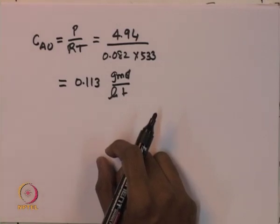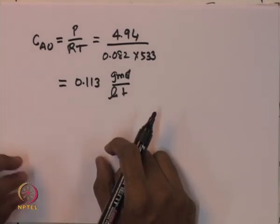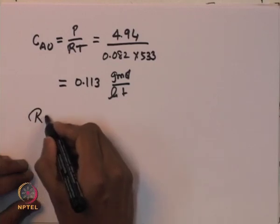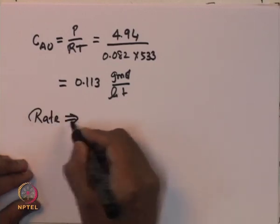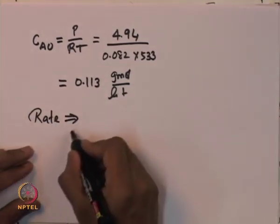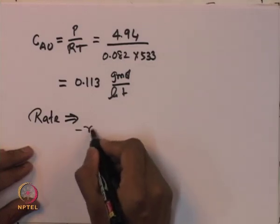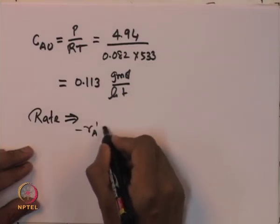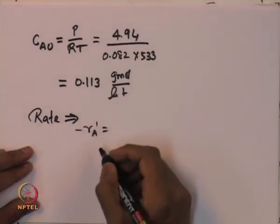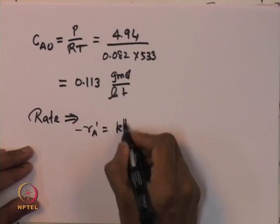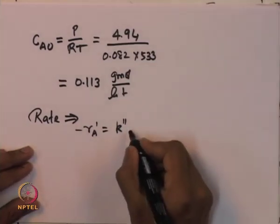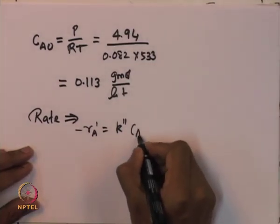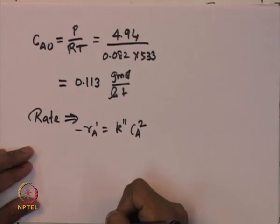The next step is to look at the rate law. We said it is a second order reaction. Therefore the rate law: minus R_A prime is equal to the specific reaction constant multiplied by C_A square, which is the second order reaction.